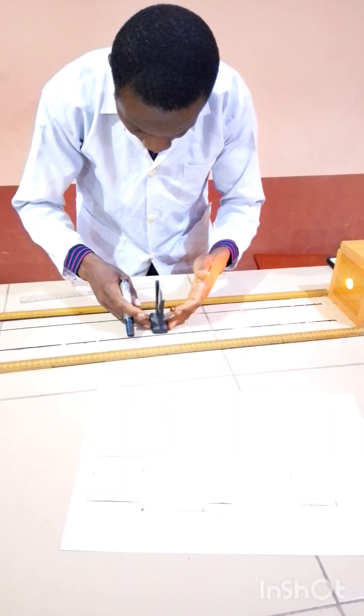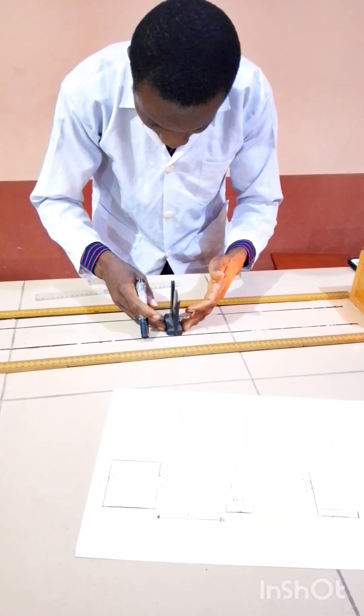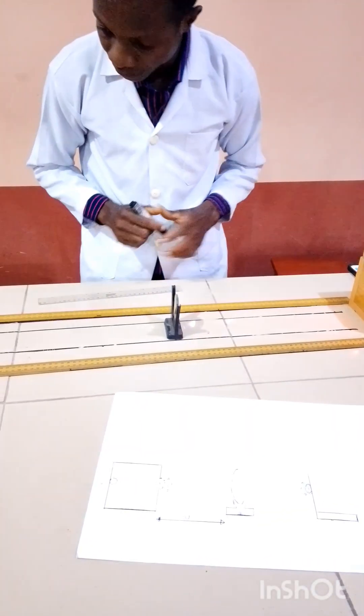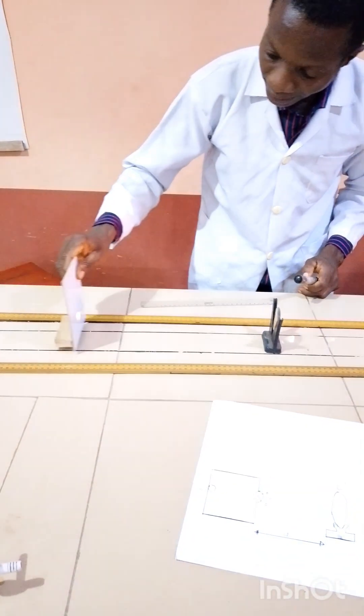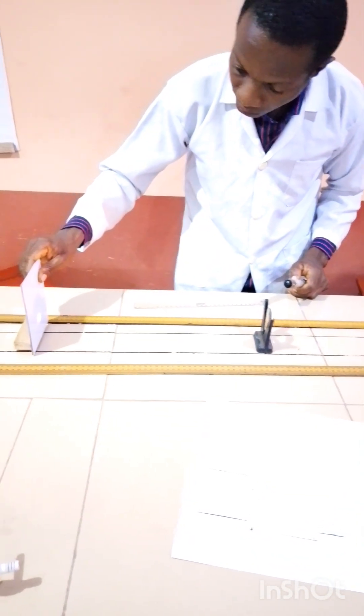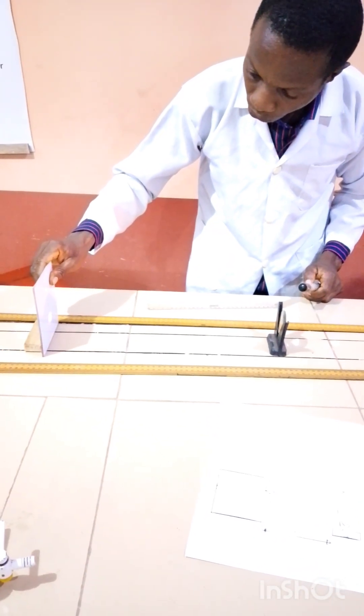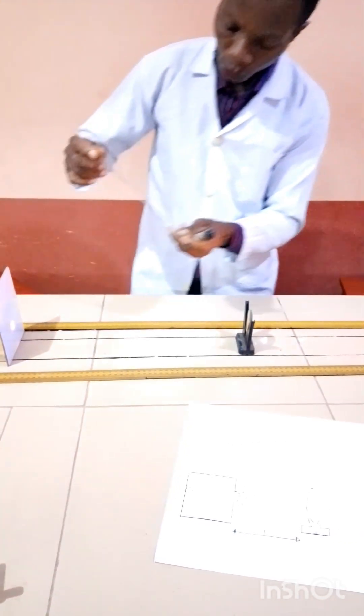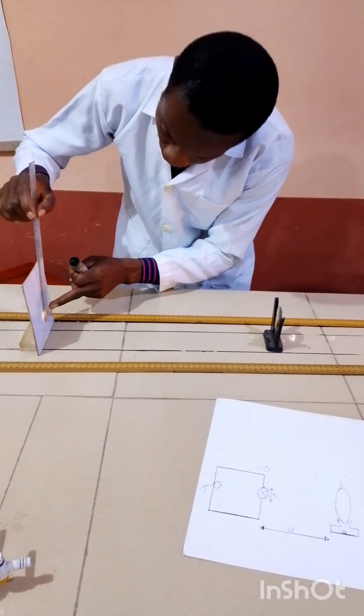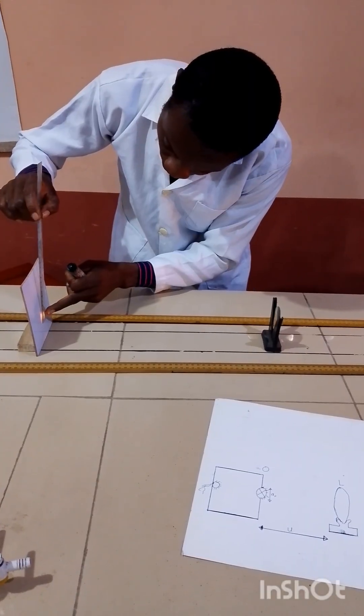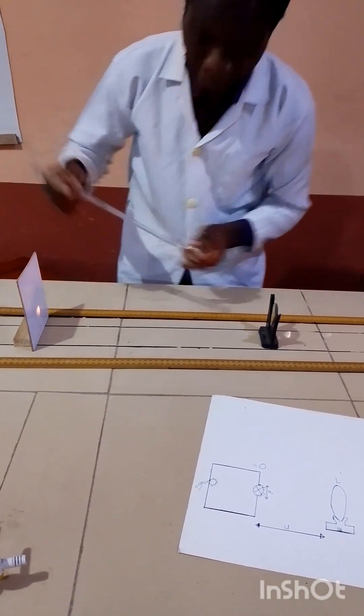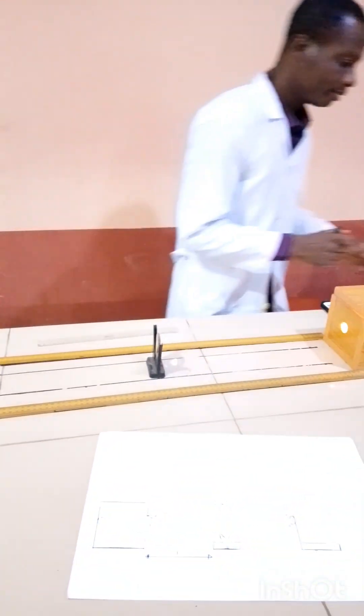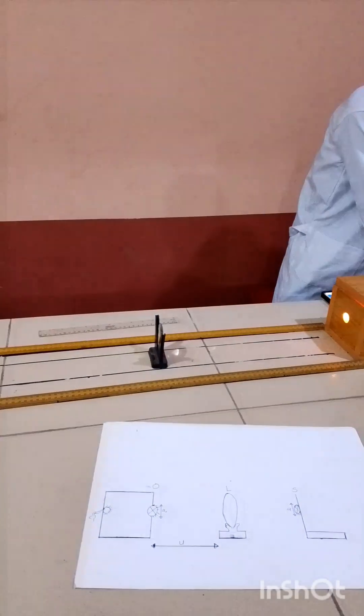Then, I will come again. Take it to 40. We are at 40. Then, readjust it again until you get a sharp image of the object. This is a sharp image. Then, you measure. Here, we have 2.3. So, 2.3.